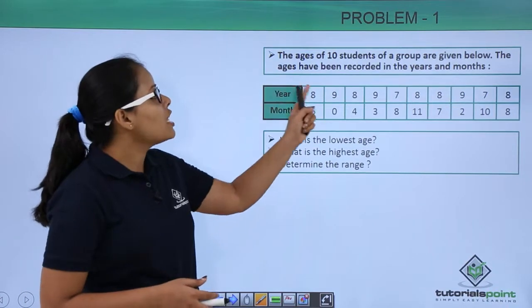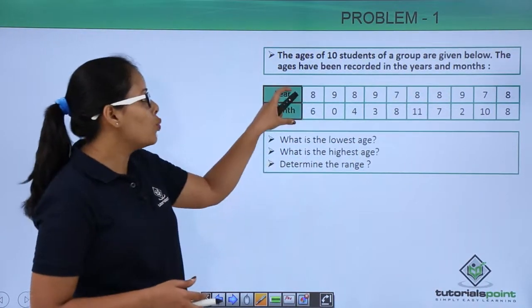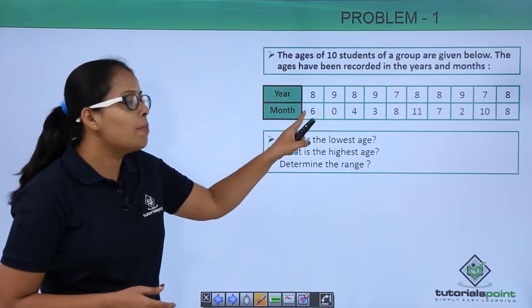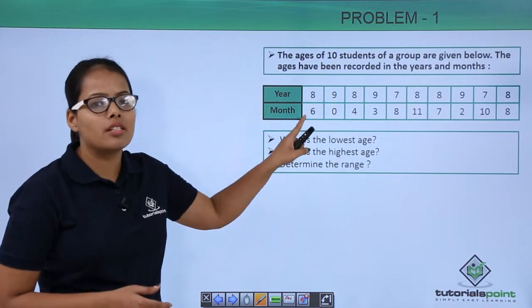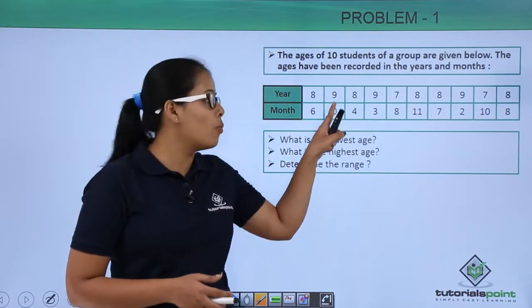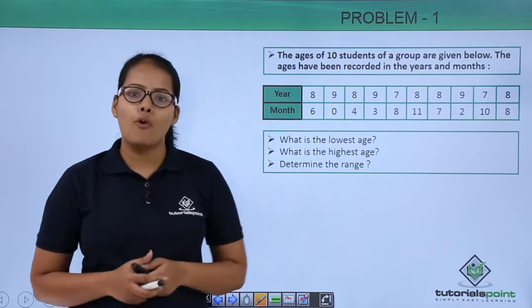Now the ages have been recorded in the form of years and months. So this one observation showing you that there is a person with the age 8 years and 6 months. There is a second person with the age 9 years and 0 months. There is a third person with the age 8 years and 4 months.